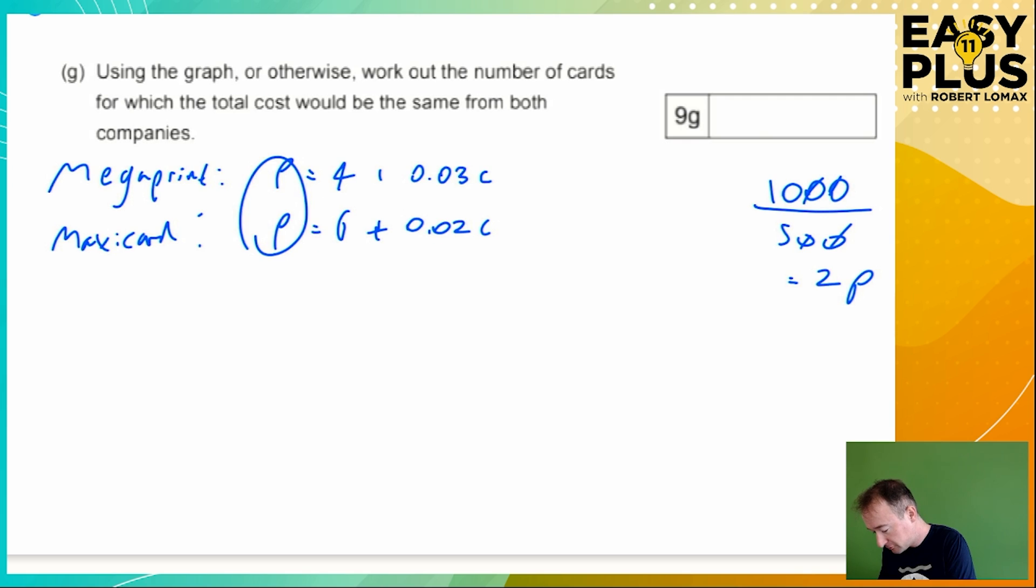This must be the same as this. And we can write this out using an is the same as sign. What is is the same as in maths? Of course, it's equals. So 4 + 0.03c is the same as 6 + 0.02c. And remember, c is the number of cards.